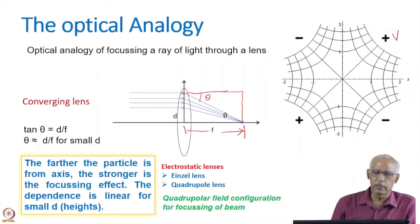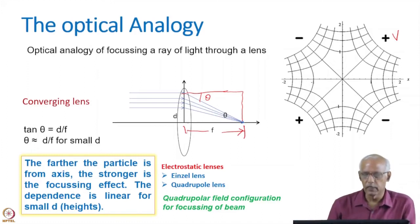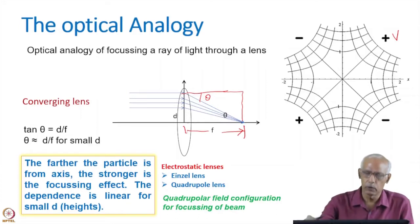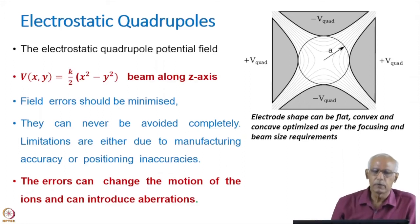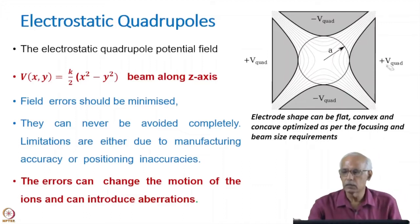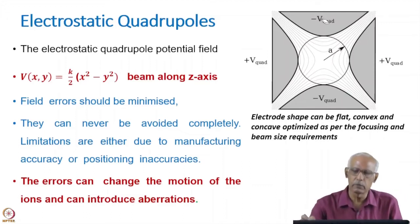In the quadrupole field configuration, the particle will be focused properly if the opposite poles are of similar polarity. In the case of the electrostatic quadrupole shown here, this is plus V and this is minus V. The field, which is a function of X and Y — where Z is the beam direction normal to this plane — with this geometry, the voltage distribution as a function of X and Y depends on K over 2 times (X squared minus Y squared). This is exact if the geometry of the poles is hyperbolic.